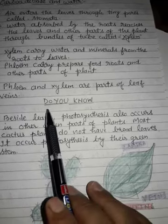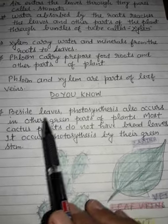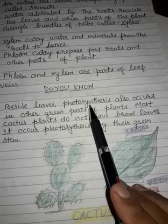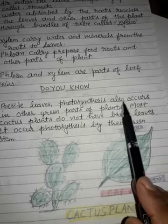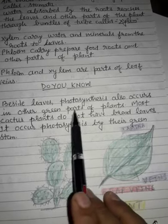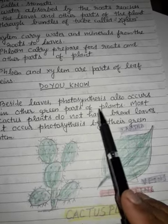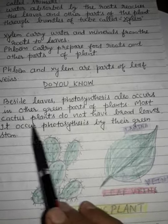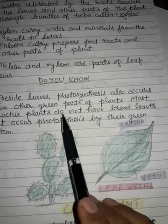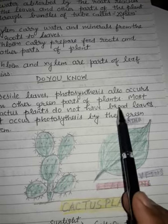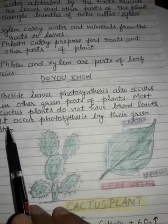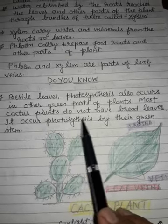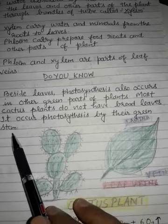Students, do you know about this? Besides leaves, photosynthesis also occurs in other green parts of plants. Most cactus plants do not have broad leaves. It performs photosynthesis through their green stem.